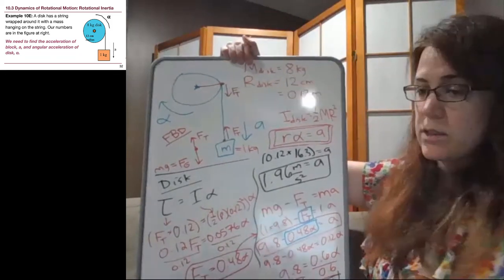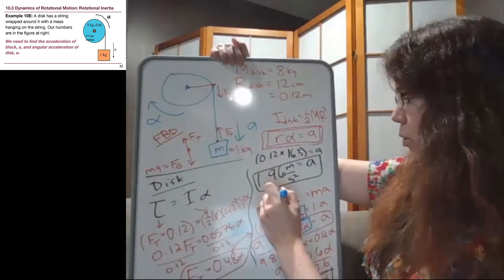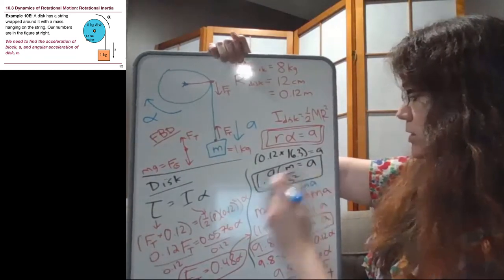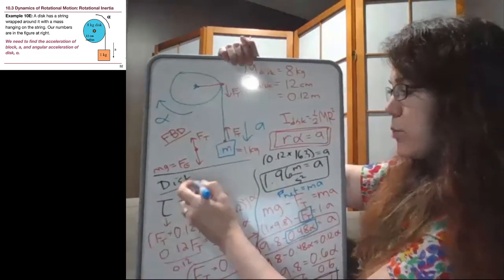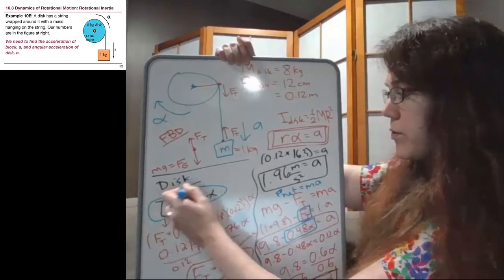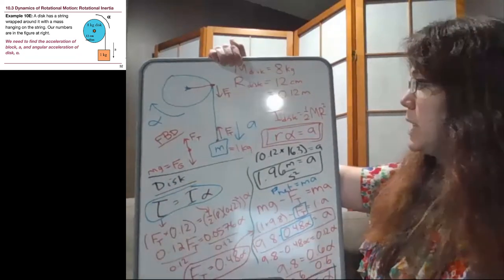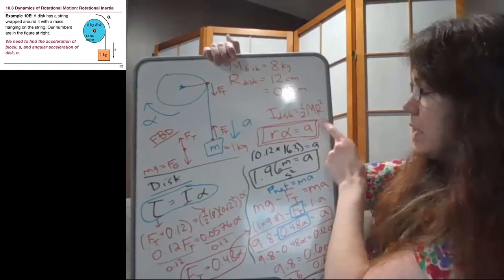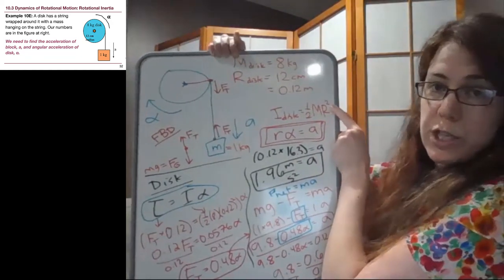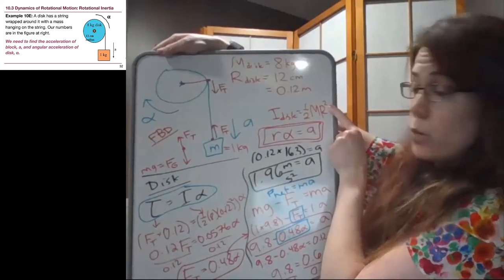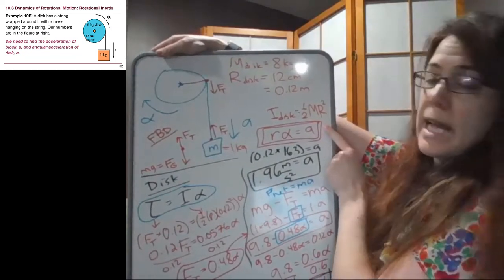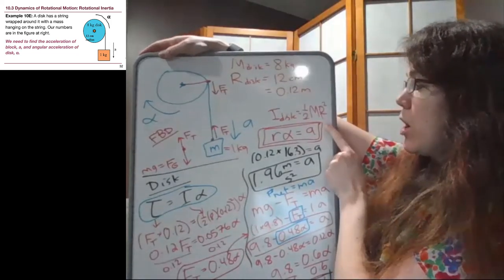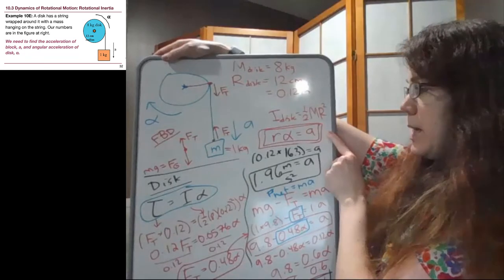To remind us of the key steps that we took, we had F net equals MA for the object that was just accelerating, and we had torque equals I alpha for the object that was just rotating. The two additional pieces that we had to bring into play here is that the moment of inertia of a disk is a known tool we can use, and that the regular acceleration and the angular acceleration are related to each other by R alpha equals A.